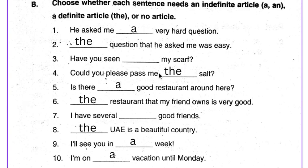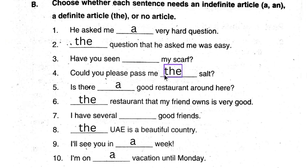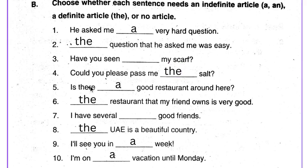'Could you please pass me the salt?' 'Is there a good restaurant around here?' 'The restaurant that my friend owns is very good.' Next: 'I have several — good friends.' The answer is: 'I have several good friends.' This also does not need an article.